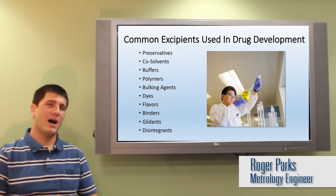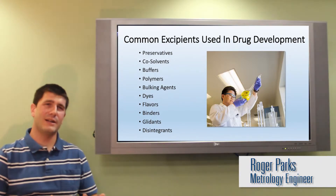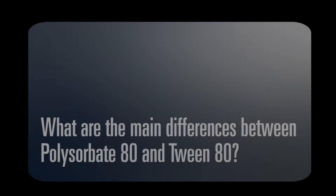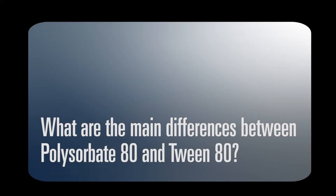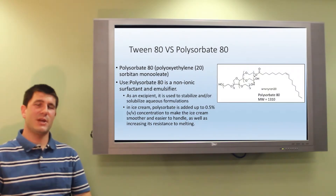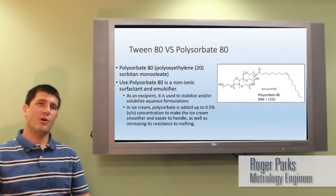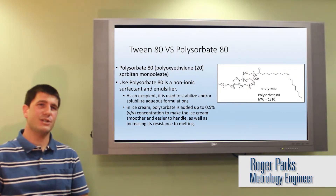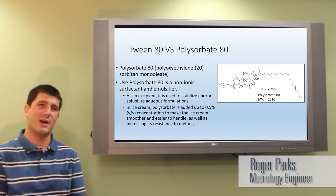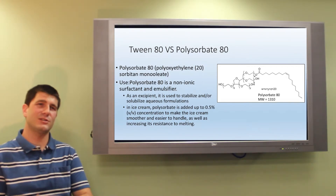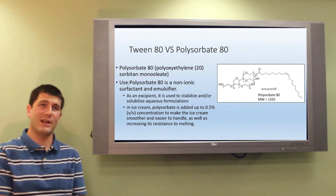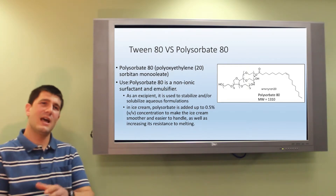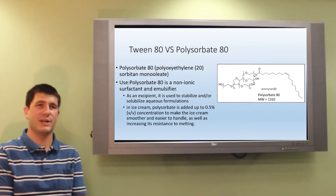You might use a flavor or a dye in order to achieve the desired product profile. You might also use a binder or a glidant in order to aid in the manufacturing process. Polymers are a common type of excipient used here at Pharmatek. Normally we've used the terms Tween 80 and Polysorbate 80 interchangeably, however we found that these two compounds are actually different in their starting materials and in their interactions with a particular drug.